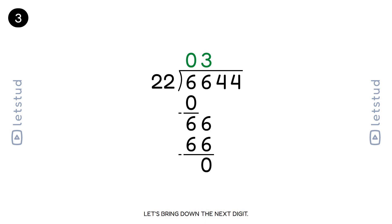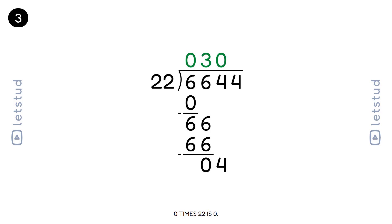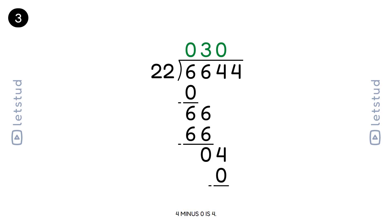Let's bring down the next digit. We have a remainder of 0 and bring down the 4 to make 4. 22 fits into 4 zero times. 0 times 22 is 0. 4 minus 0 is 4.